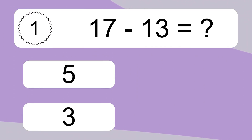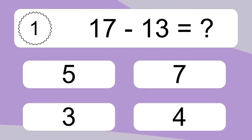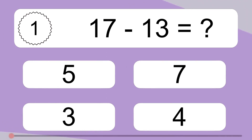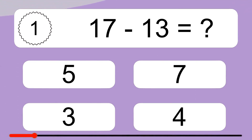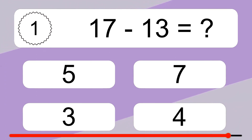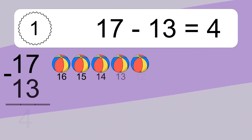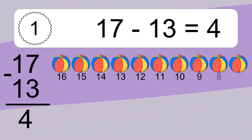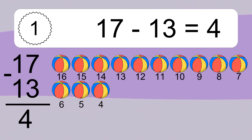17 minus 13 equals what? 17 minus 13 equals 4.